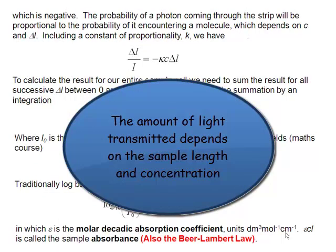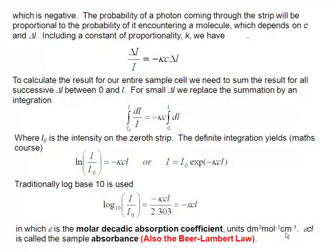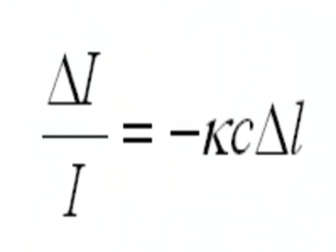Because if the sample is longer, then there's a greater chance that the photon of light will be absorbed, because it has a greater chance of encountering an absorbing molecule. So delta I over I is going to be proportional to concentration and delta L, the length of that strip of the sample.